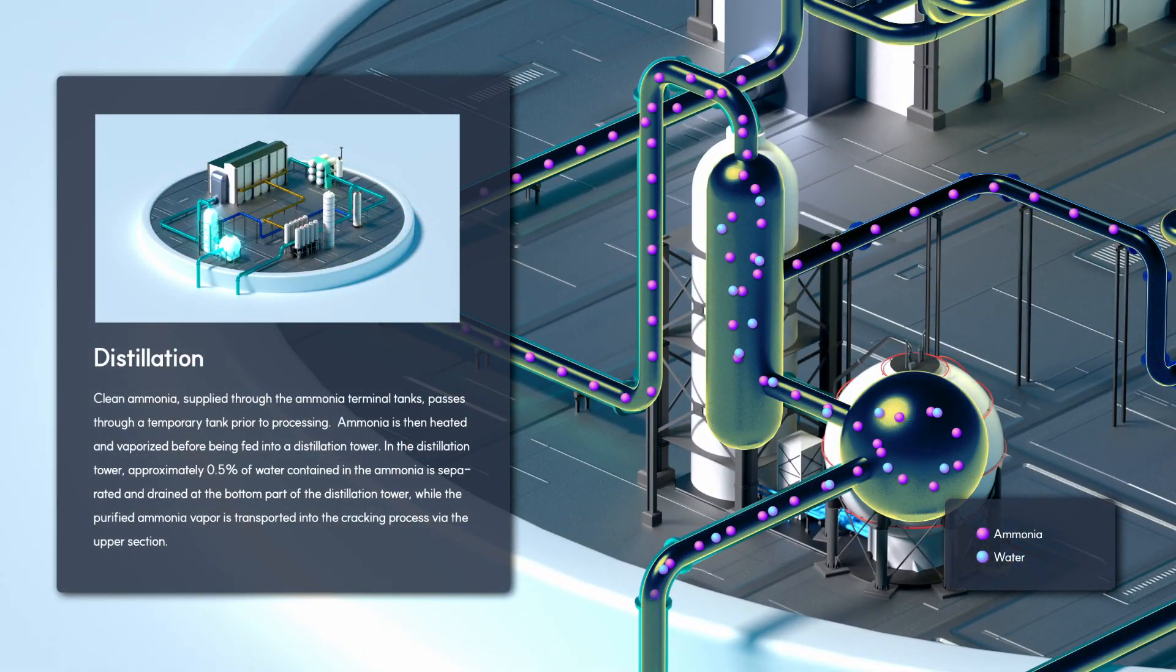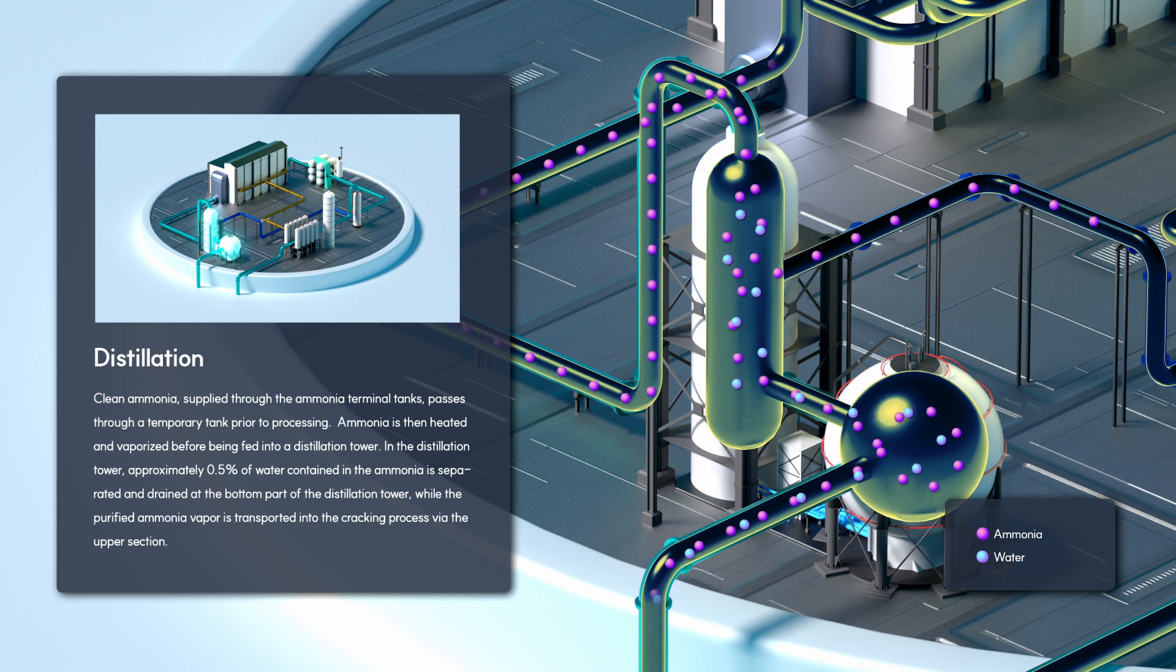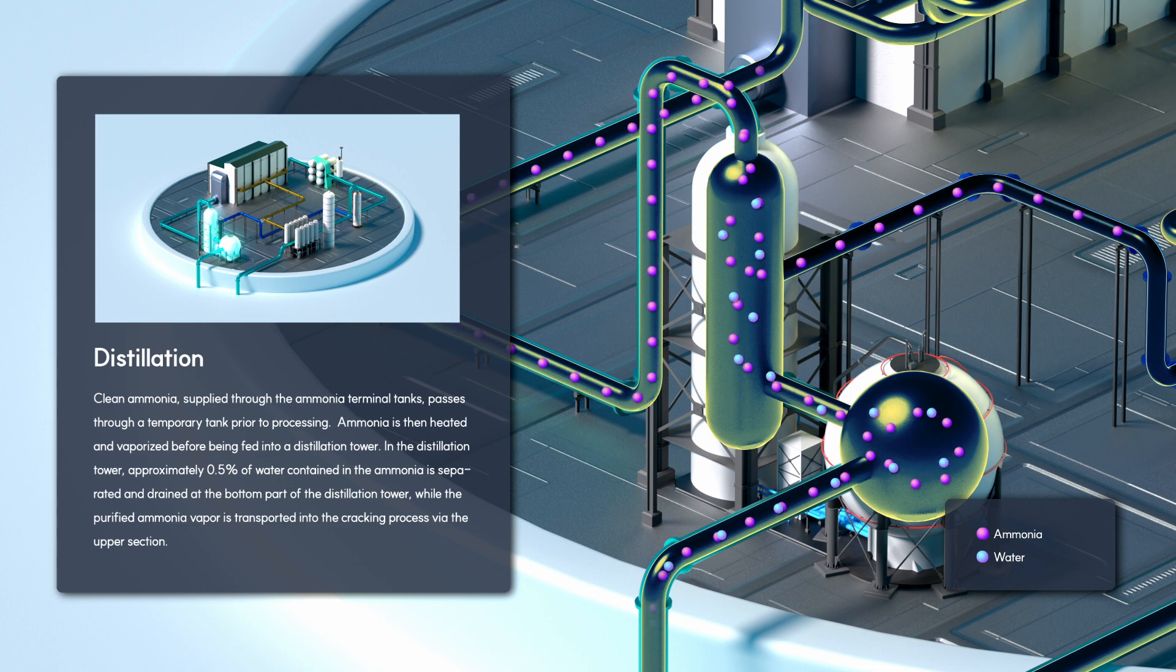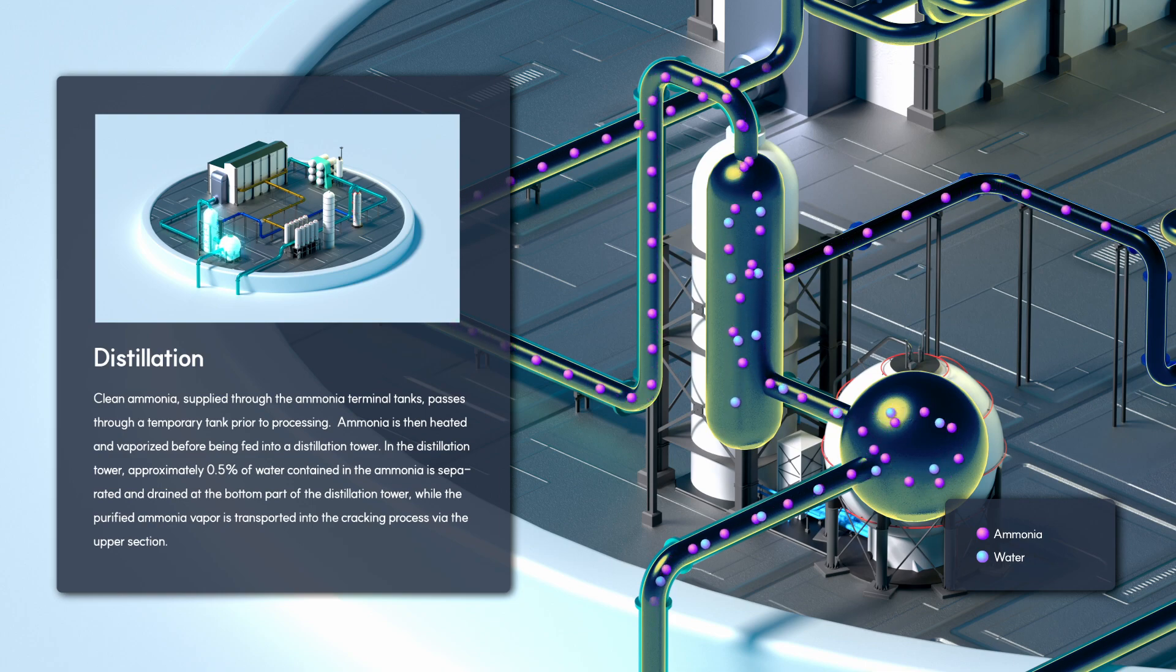Clean ammonia supplied through the ammonia terminal tanks passes through a temporary tank prior to processing. Ammonia is then heated and vaporized before being fed into a distillation tower. In the distillation tower, approximately 0.5% of water contained in the ammonia is separated and drained at the bottom, while the purified ammonia vapor is transported into the cracking process via the upper section.